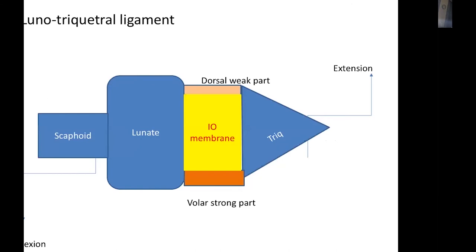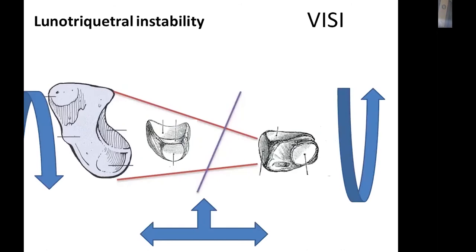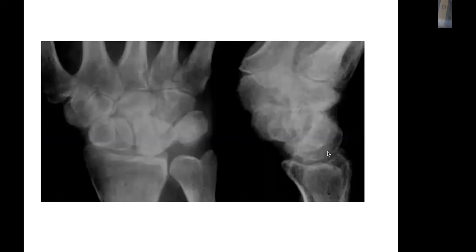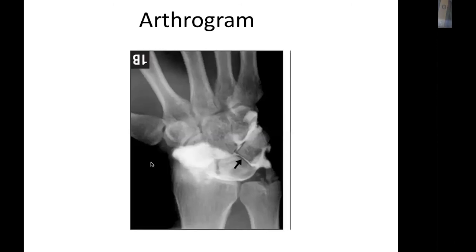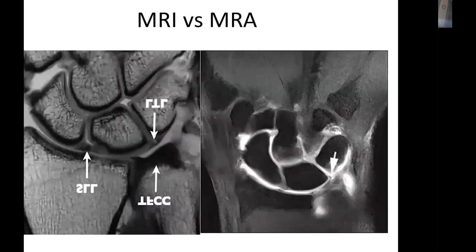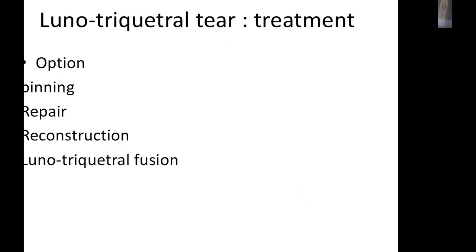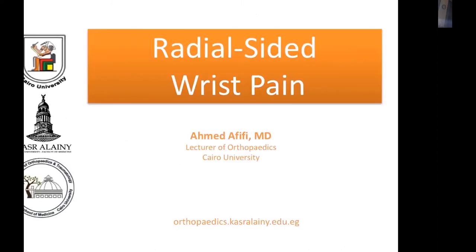In lunotriquetral injury, the lunate loses its attachment to the triquetrum and flexes anteriorly due to its scaphoid attachment — known as VISI deformity — with disruption of Gilula's lines on X-ray. Arthrogram and MRI arthrogram are diagnostic, and arthroscopy can also assist in management. Treatment ranges from splinting in early cases, repair by suture anchor, reconstruction, or lunotriquetral fusion.